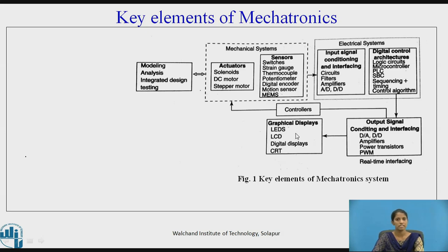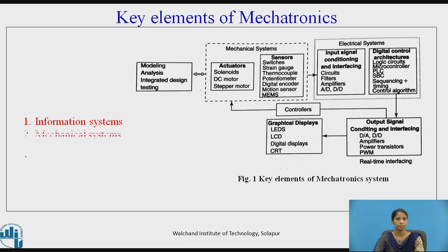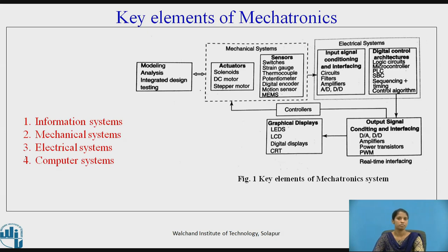The graphical displays include LEDs, LCDs, digital displays, and CRT. The output signal conditioning and interfacing block includes digital-to-analog converters, amplifiers, and the complete block is known as real-time interfacing. The mechatronics system is classified into five different categories: information systems, mechanical systems, electrical systems, computer systems, and real-time interfacing.